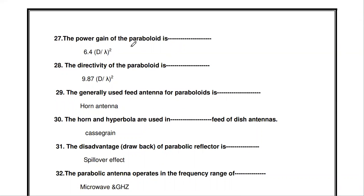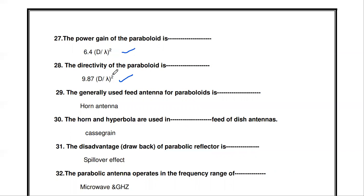The power gain of the paraboloid is 6.4 * (D/lambda)^2. The directivity of the paraboloid is 9.87 * (D/lambda)^2. These are standard answers you have to memorize.